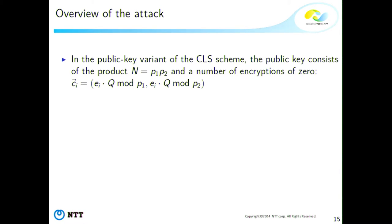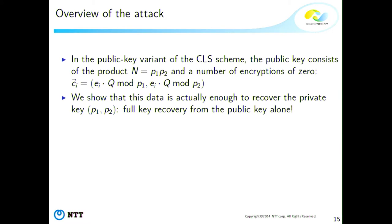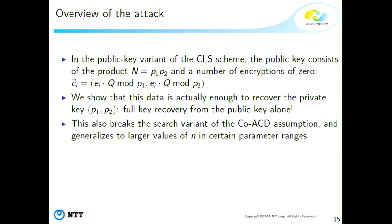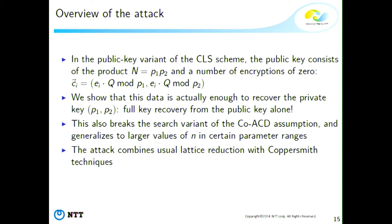The third attack is on the public key variant of CLS, or equivalently on the search version of the co-ACD assumption. In the public key variant, the public key is the product N = P_1 · P_2 and encryptions of zero. We show that this data alone — just the public key — is enough to recover both primes P_1, P_2 and factor N, giving full key recovery. It generalizes to larger n using a variant of Coppersmith's theorem due to Alexander May, and also uses a combination of standard lattice reduction with Coppersmith techniques.